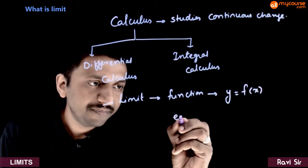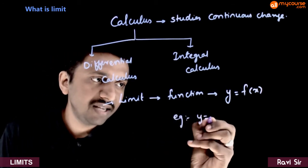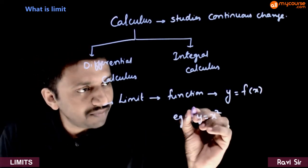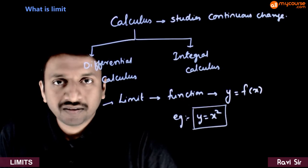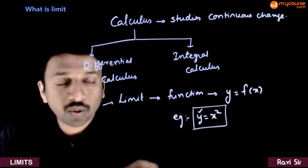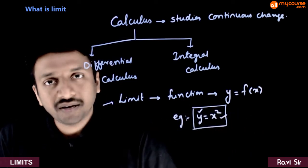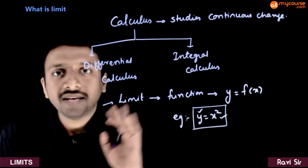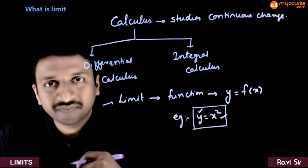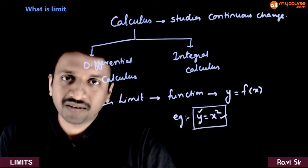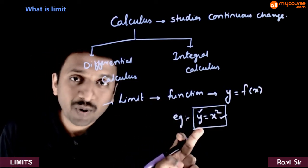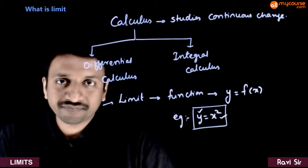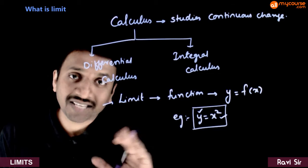For example, y is equal to x square is a function. That means y is a dependent variable and x is an independent variable. So as x changes, y changes correspondingly by this rule y is equal to x square. And corresponding to every function, we know that you have a graph which you can draw on the xy plane.